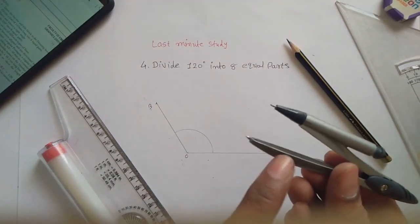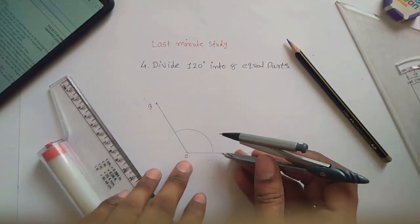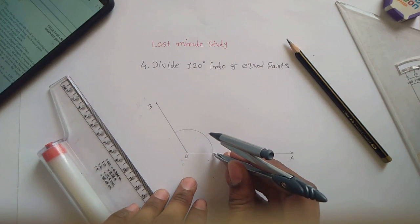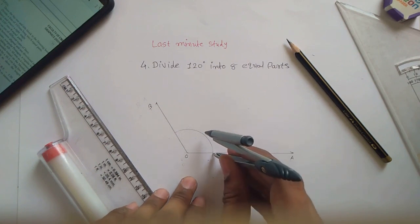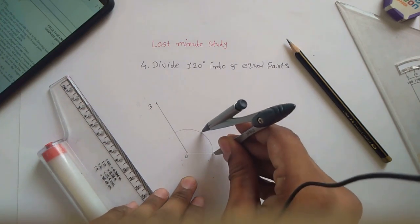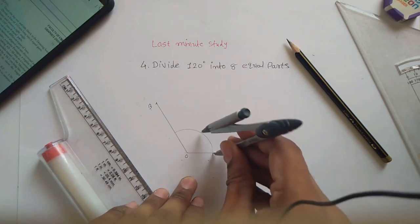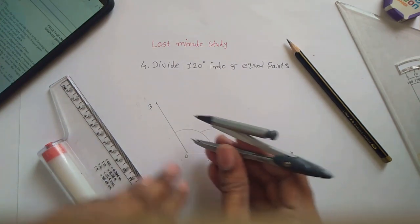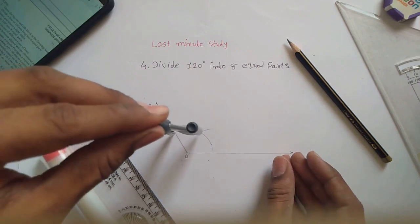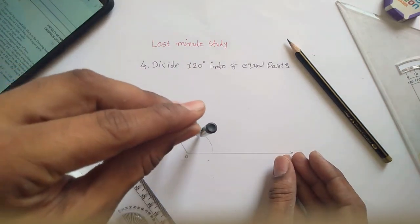Now you have to maintain this distance. Don't disturb this distance, otherwise error will occur. Make an arc outside the curve to find the intersecting points like this. Put the pointer over here and make an arc to find the intersecting point.